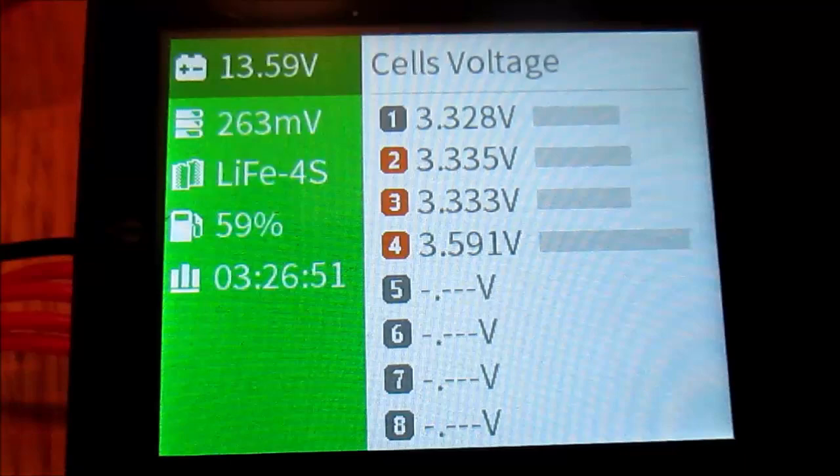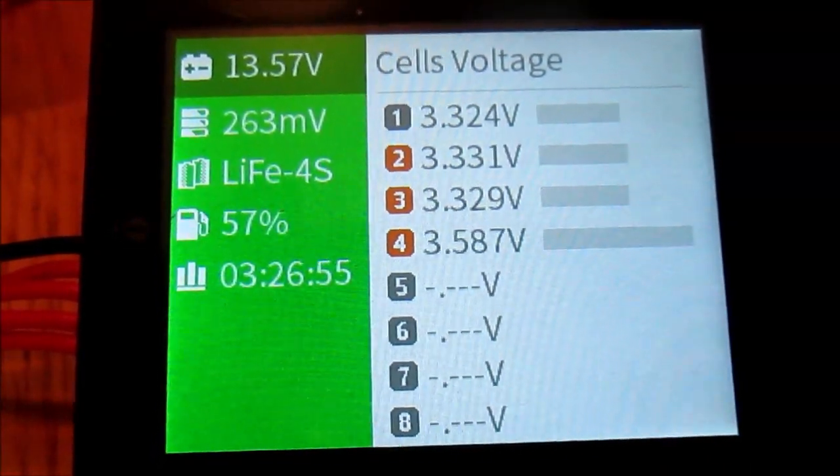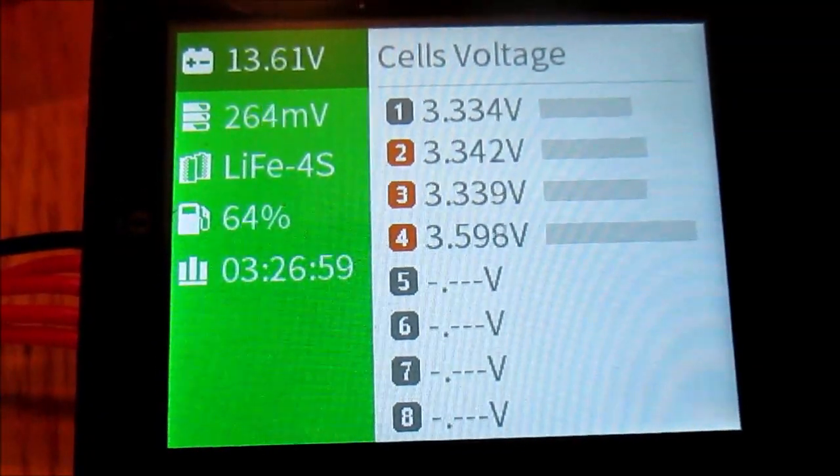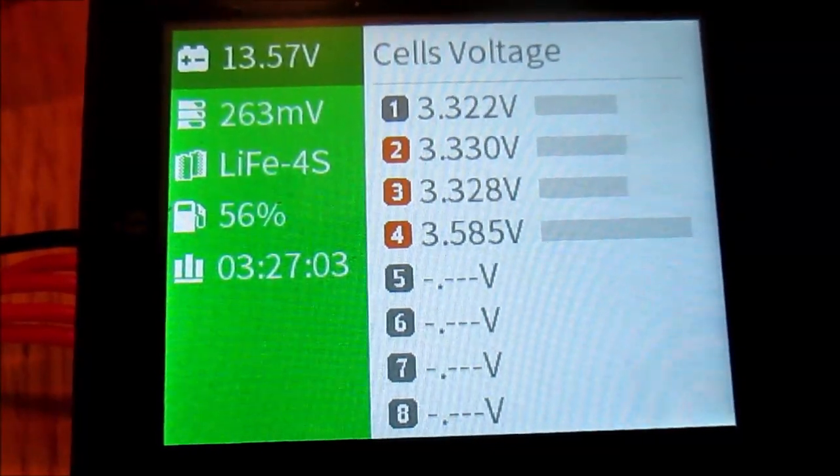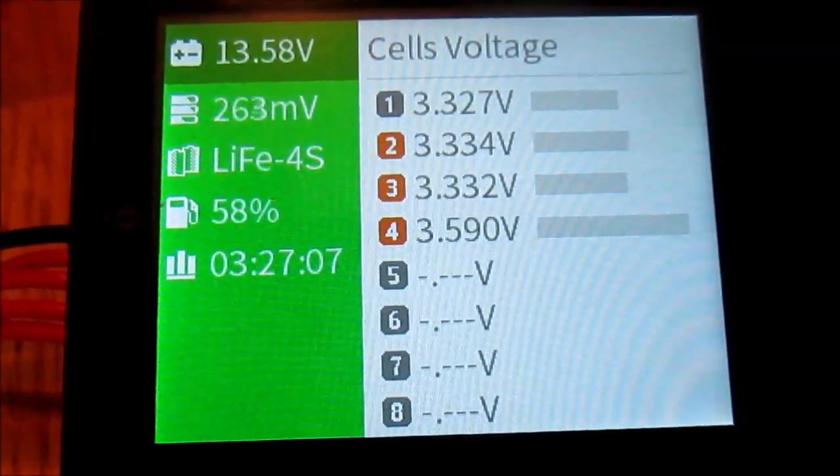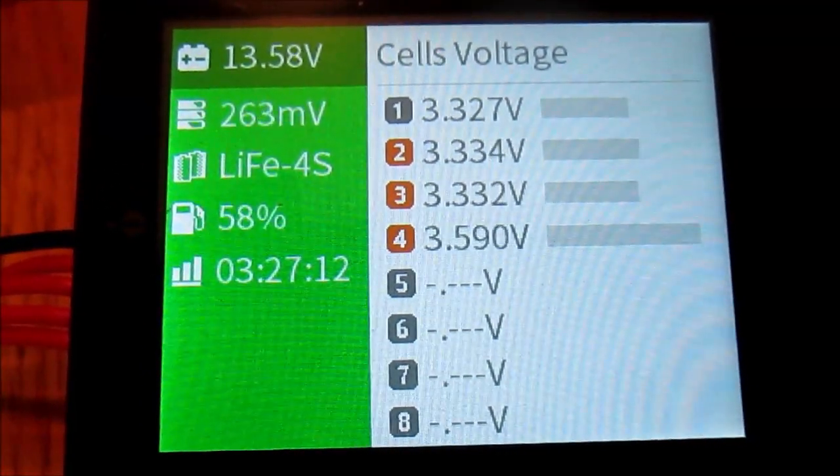I took a look at the variance between the cells and it increased from about 55-56 millivolts to 263 millivolts. Clearly cell number four was delivered at a much higher state of charge than the other three cells.